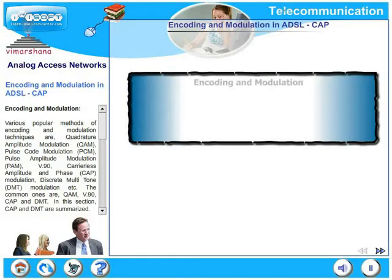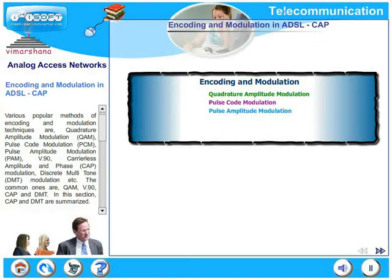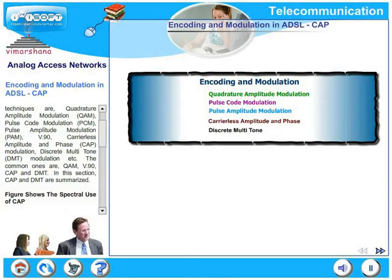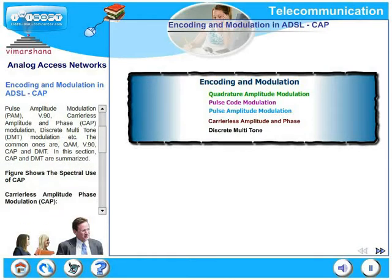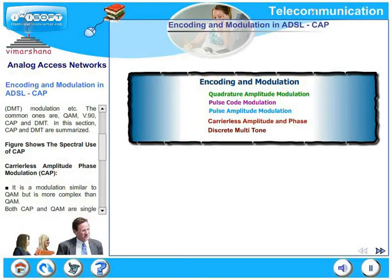In this slide, let us look at the encoding and modulation signal processing techniques that are used in DSL technologies. Various popular methods of encoding and modulation techniques are QAM, pulse code modulation, pulse amplitude modulation, V.90, carrierless amplitude and phase modulation, discrete multi-tone modulation, and so on. The common ones are QAM, V.90, CAP, and DMT. In this section, CAP and DMT are summarized.